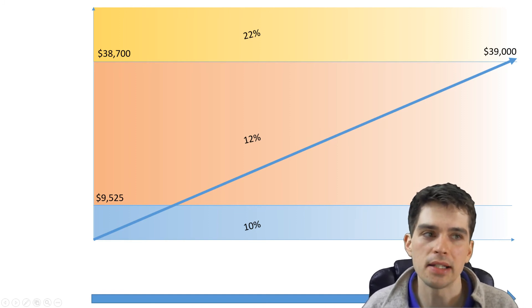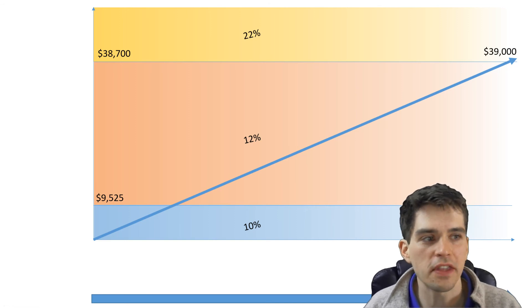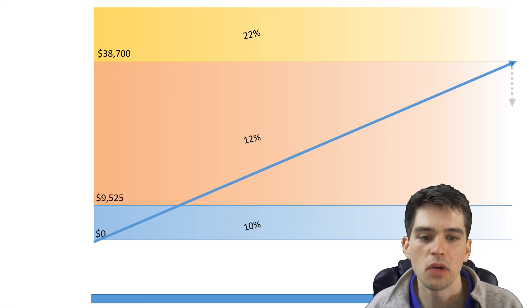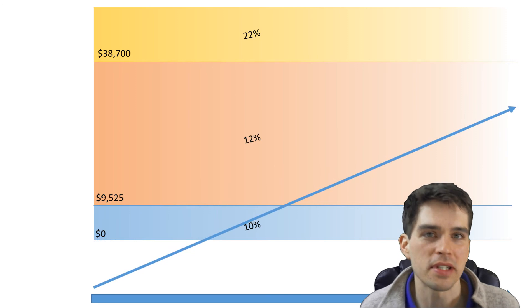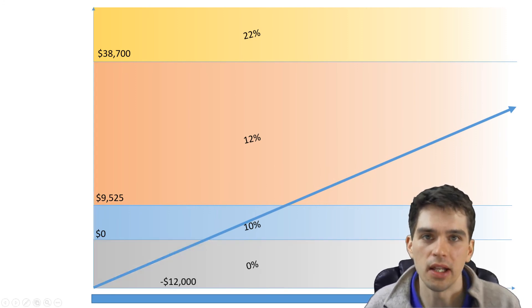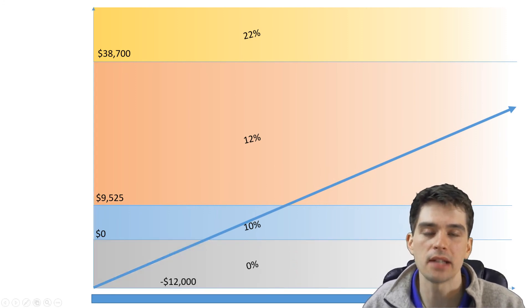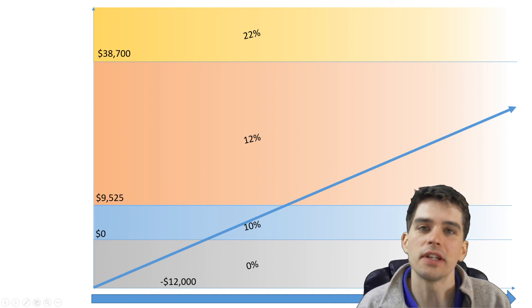And what most people don't realize is we have some income that's not even taxable. So I'm going to shift this line down to represent the hidden 0% tax bracket. That's right. As of 2018, everybody gets a $12,000 standard deduction.